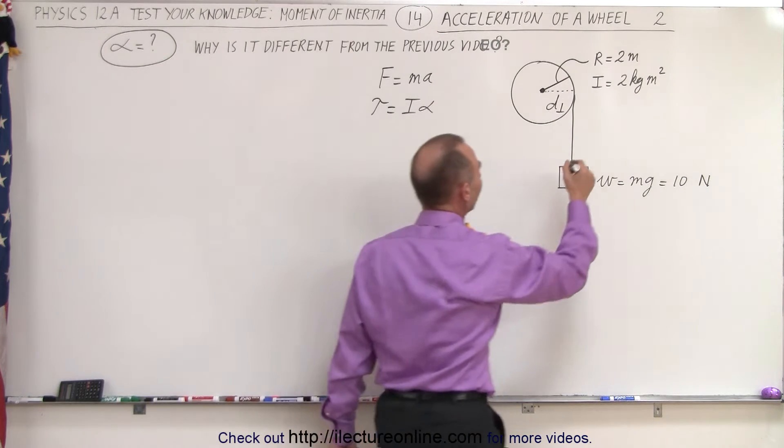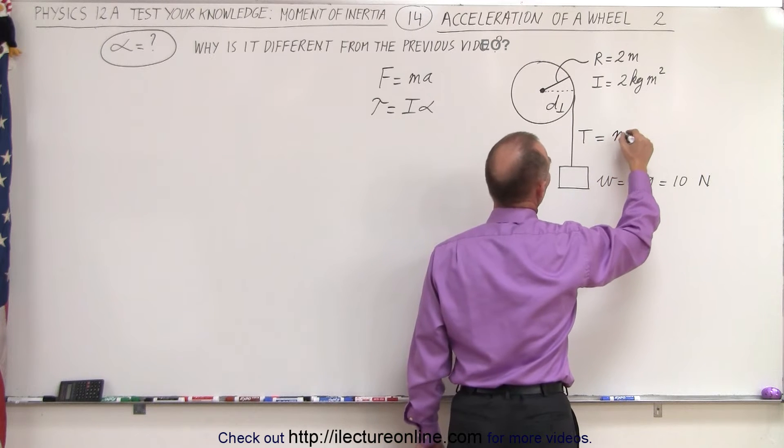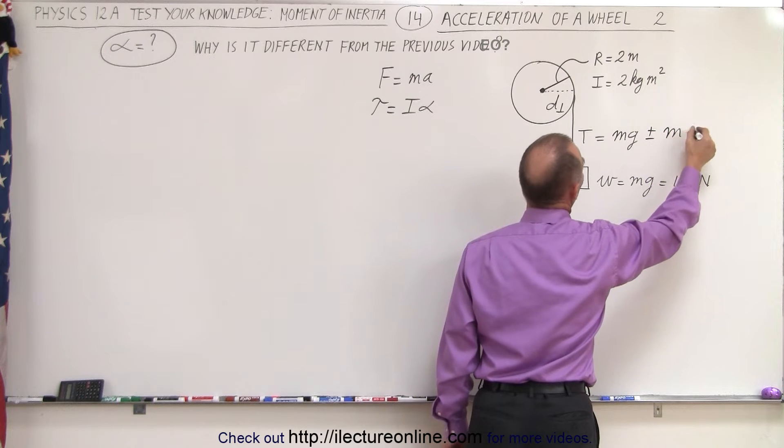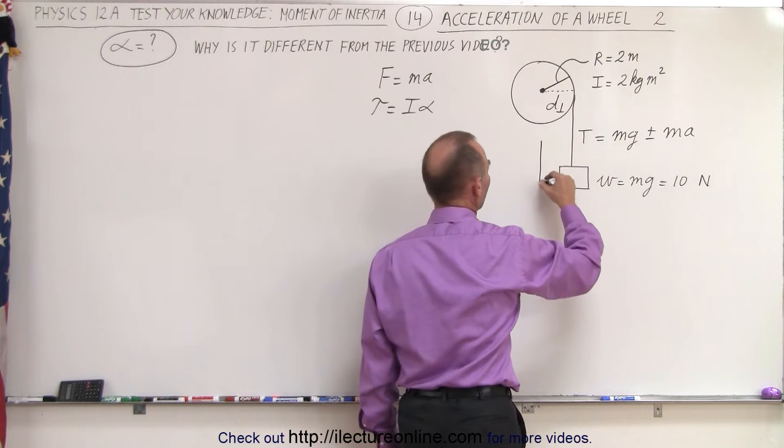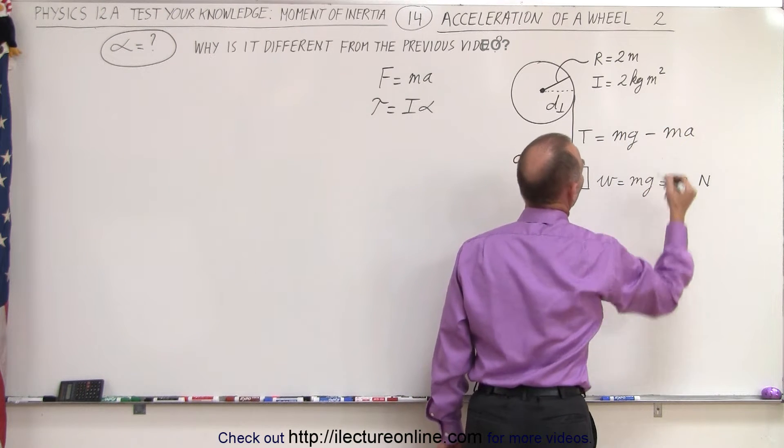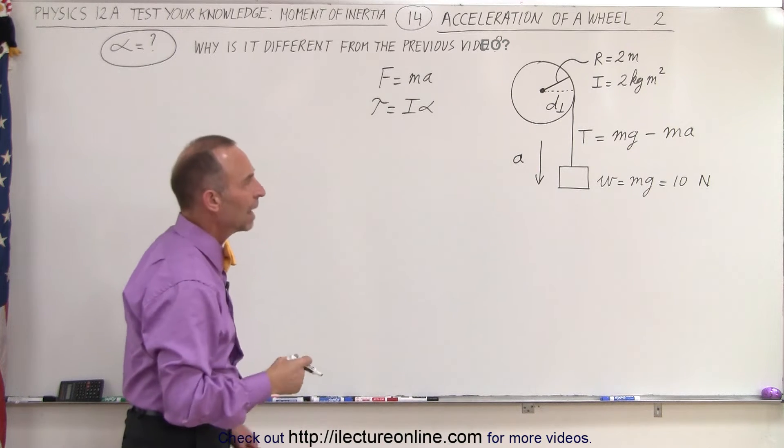Now we need to find the tension in the string, and the tension in the string is always going to be equal to the weight hanging from the string plus or minus the force required to accelerate it. But since we expect acceleration to be downward, we're going to use minus MA because it reduces the tension on the string by the quantity MA.